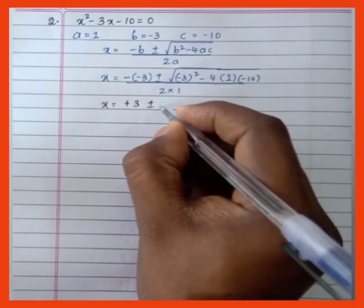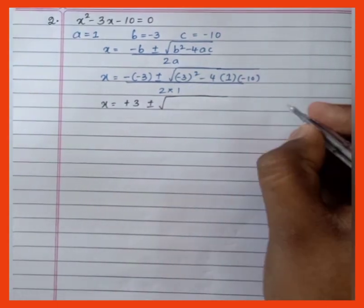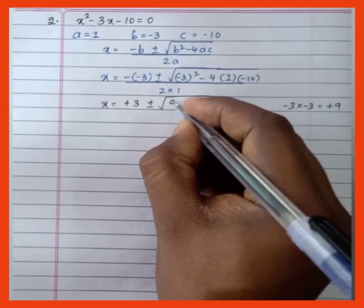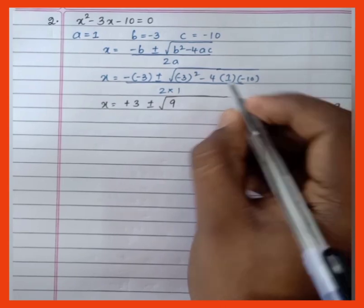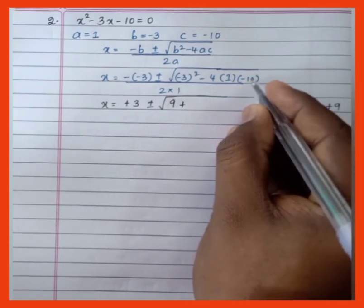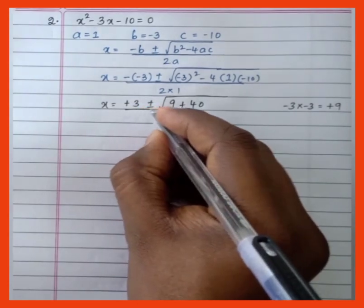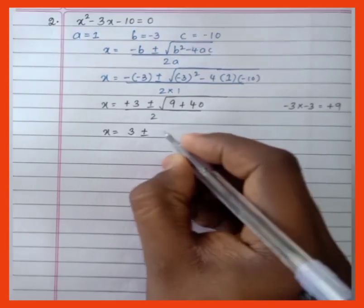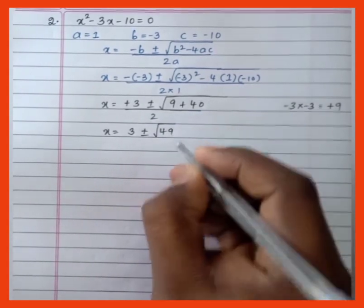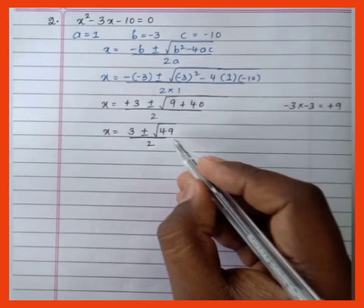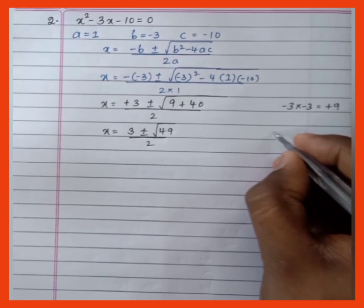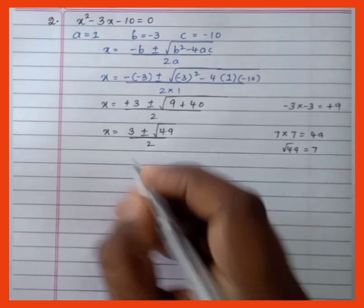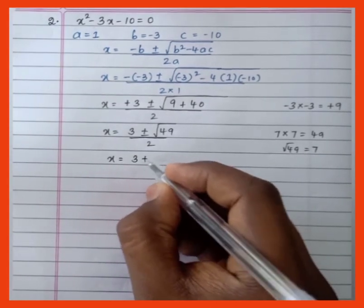So we get: x = (3 ± √((-3)² - 4 × 1 × (-10))) / 2. Now (-3) × (-3) = +9, and minus into minus is plus, so 4 × 1 × 10 = 40. Therefore x = (3 ± √(9 + 40)) / 2 = (3 ± √49) / 2. The square root of 49 is 7.